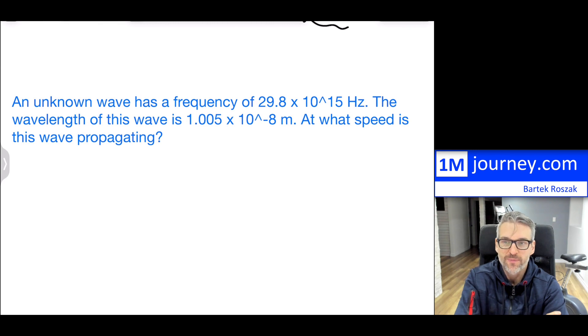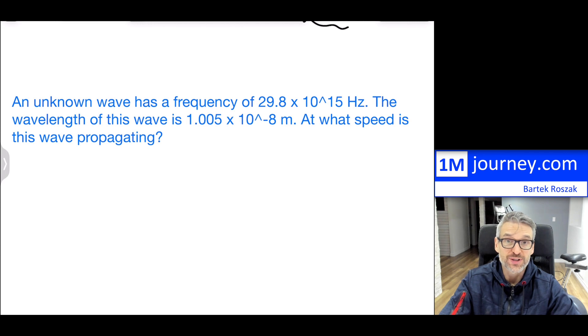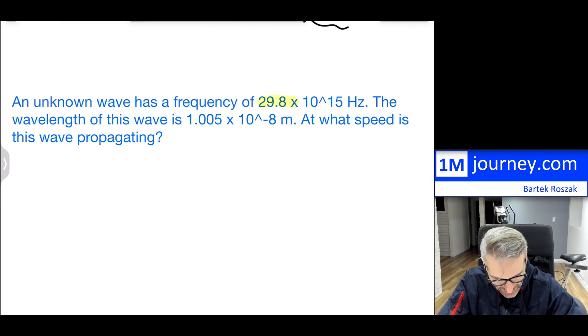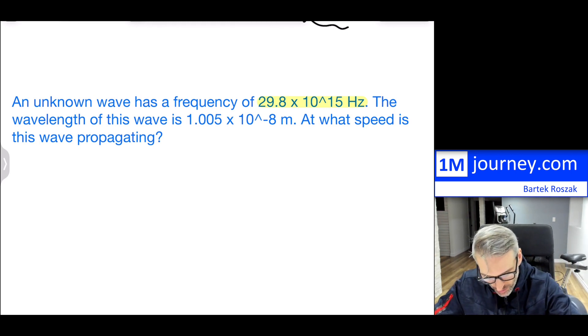So here we have an unknown wave. It has a frequency of, notice it's enormous, 29.8 times 10 to the 15 hertz. That's huge. This is how many cycles you want to have every single second. So there's a lot of these oscillations back and forth in one second. The wavelength of this wave is tiny. Of course, it's going to be tiny if it's moving that quickly. Let's take a look and see how are we going to figure out at what speed this thing is moving.